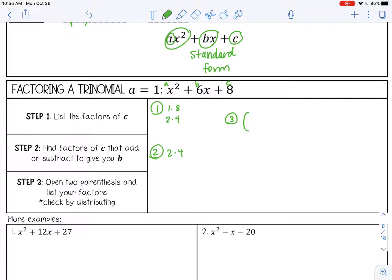And then the last step is we're going to open up two parentheses. And we're going to list our factors. So x and x are going to go first. And then these factors will go next. So plus 2 and plus 4. Because positive 2 and positive 4 add up to give us 6. You could have also listed it as x plus 4 and then x plus 2. That's the same thing. It doesn't matter the order as long as you get your signs correct.